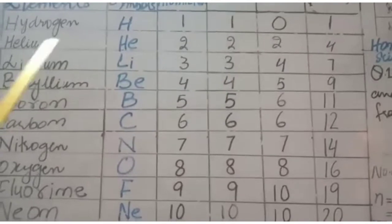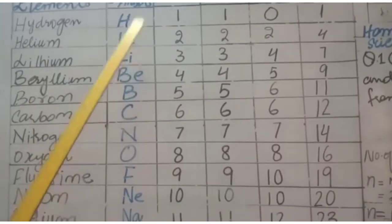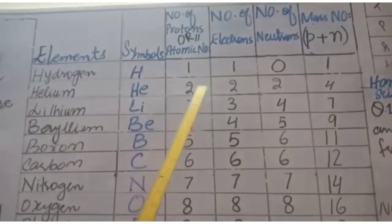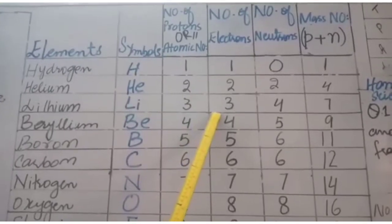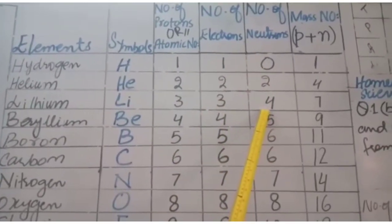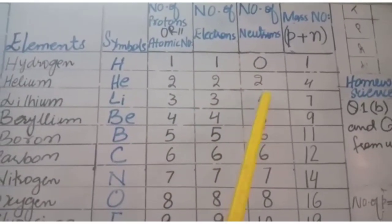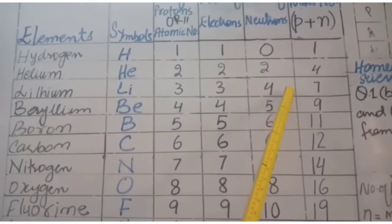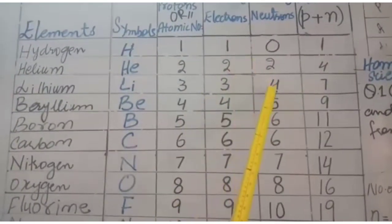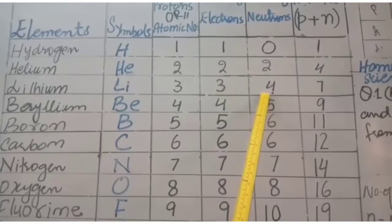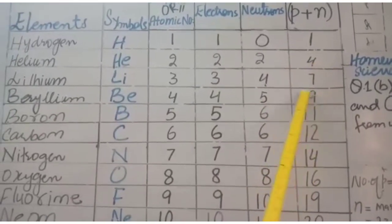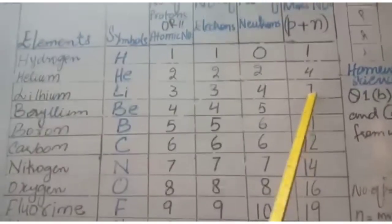For example, lithium (Li): the number of protons or atomic number is 3, number of electrons is also 3, number of neutrons is 4, so the total mass number is 3 + 4 = 7.